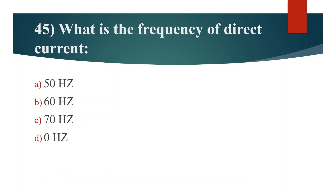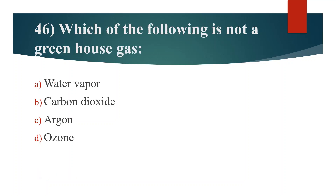Forty-fifth question. What is the frequency of direct current? Option A: 50 Hz. Option B: 60 Hz. Option C: 70 Hz. Option D: 0 Hz. Answer is Option D: 0 Hz.